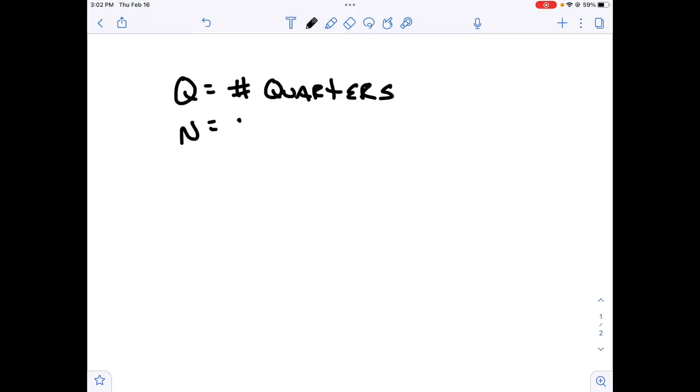I'm going to establish the two things we're dealing with. We have quarters, so I'm going to go ahead and say Q equals the number of quarters that are in my hand or on my desk. I'm going to say N is the number of nickels. And again, the number of nickels that are in my hand or on my desk.